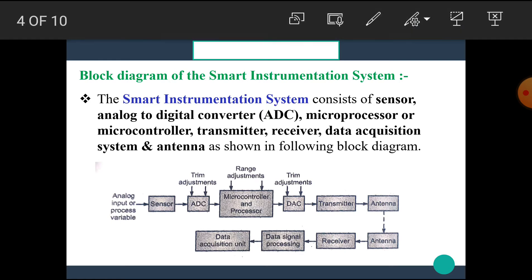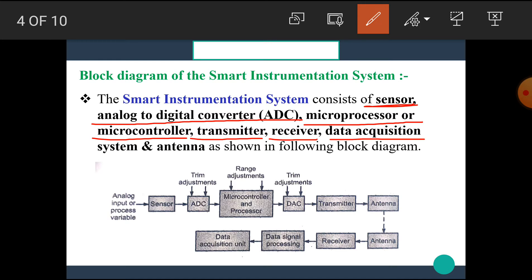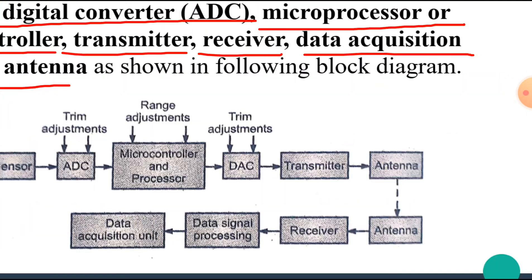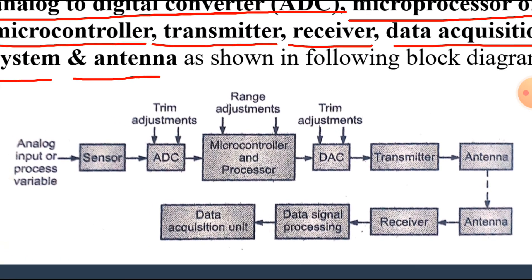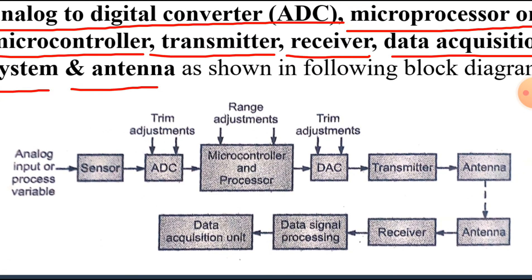Now let's see the block diagram of the Smart Instrumentation System. It consists of a Sensor, Analog to Digital Converter (ADC), Microprocessor or Microcontroller, Transmitter, Receiver, Data Acquisition System, and Antenna, as shown in the block diagram. This is the general block diagram of the Smart Instrumentation System.